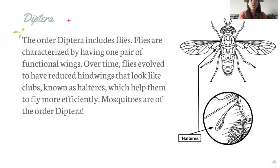Here we have Diptera. The order Diptera includes flies, and flies are characterized by having one pair of functional wings. They do have four wings, however over time they have evolved to have reduced hind wings that are very tiny, look kind of like clubs, and are known as halteres. They help flies to fly more efficiently.